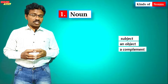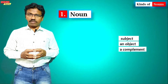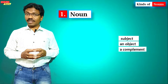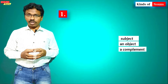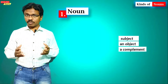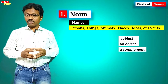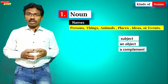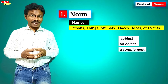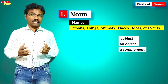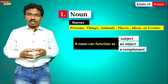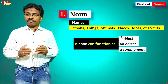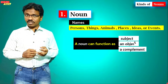We have discussed the parts of speech in the previous video — the link is in the description. In this video, we are going to learn about nouns. A noun, as we all know, is the name of a person, place, thing, animal, or event. We also call nouns 'naming words.'